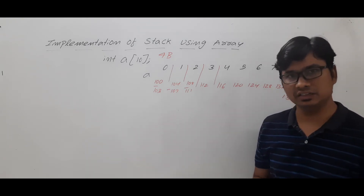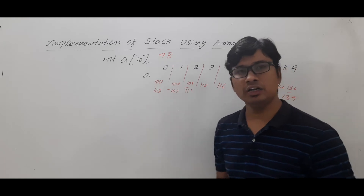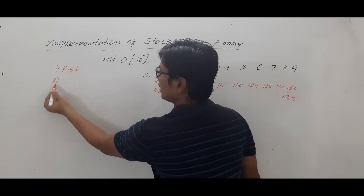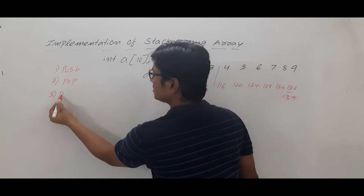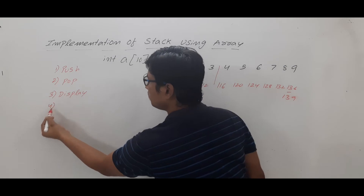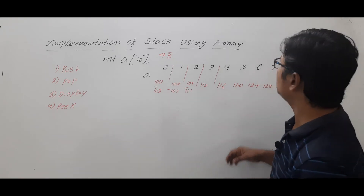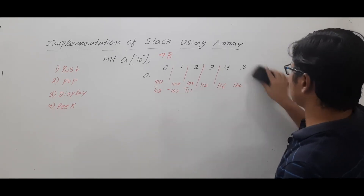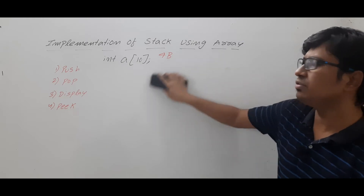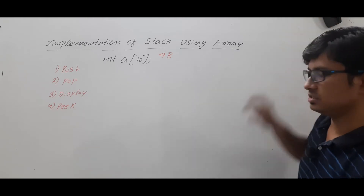Now let me discuss how to implement the stack using the array. We already discussed the various operations on a stack: push, pop, and display. Some people also mention peek — peek is nothing but displaying the topmost element from the stack. Now let me discuss how push, pop, and display will happen using arrays, and then we will write the C program to perform those operations.